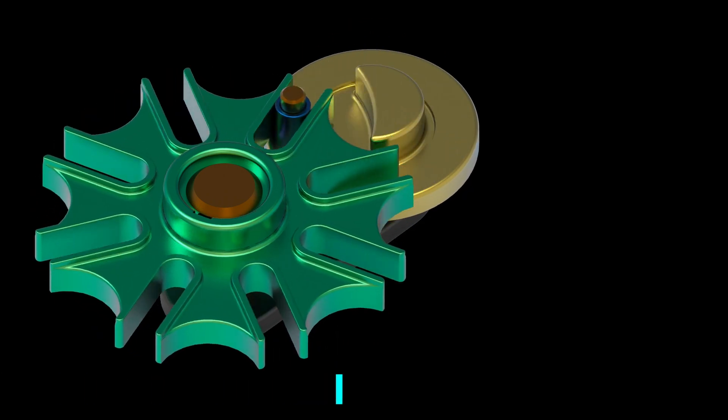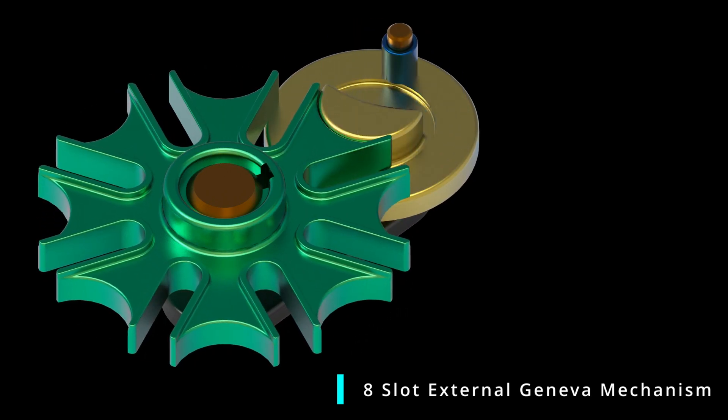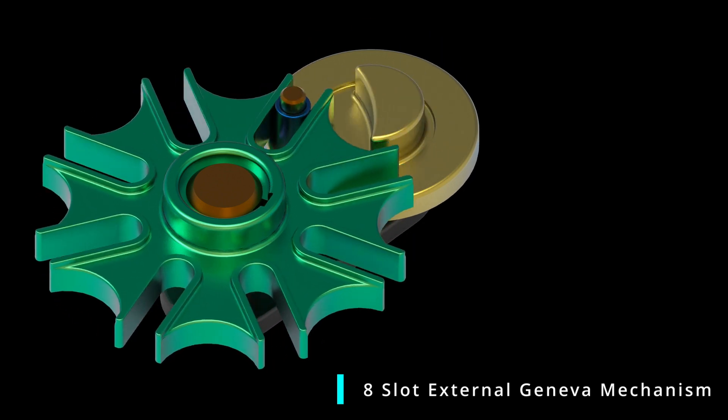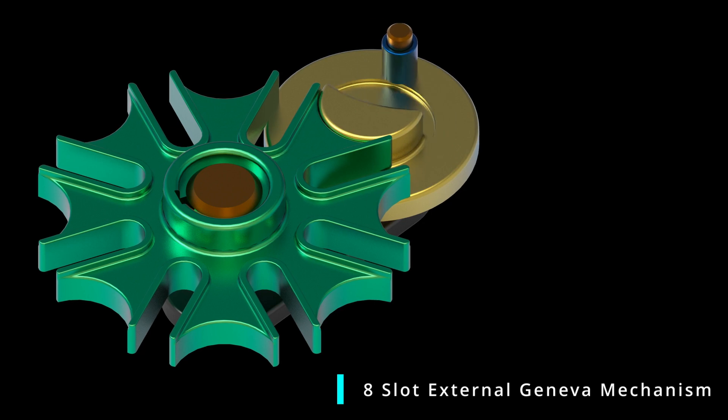This is an example of an 8 slot external Geneva mechanism drive in which the driven wheel has a total of 8 slots while the driving wheel has 1 pin. When the driving wheel completes 8 rotations, the driven wheel completes 1 rotation.